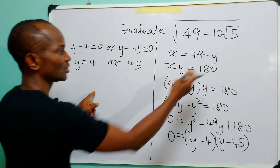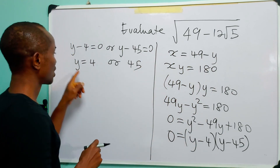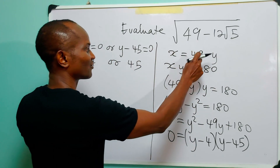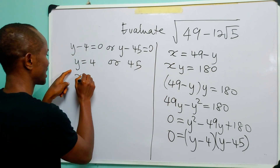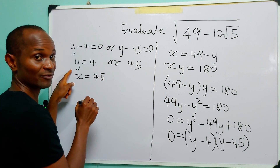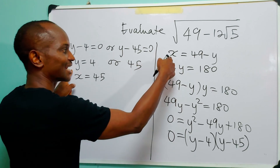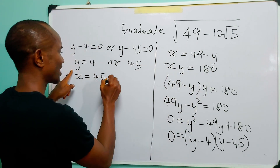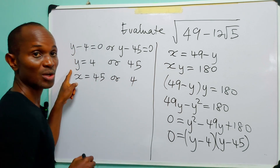Now we go back to the equation x equals 49 minus y to find values of x. When y equals 4, then x equals 49 minus 4, so x equals 45. And when y equals 45, then x equals 49 minus 45, so x equals 4.